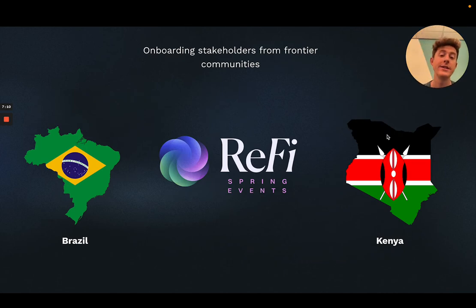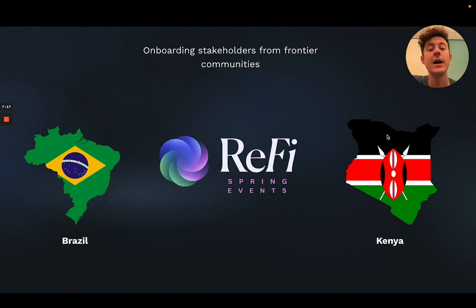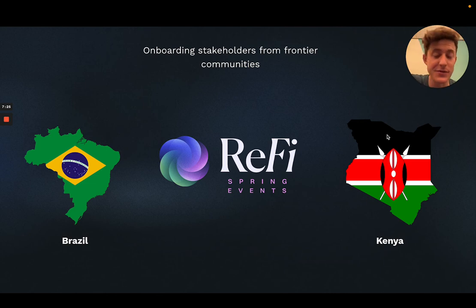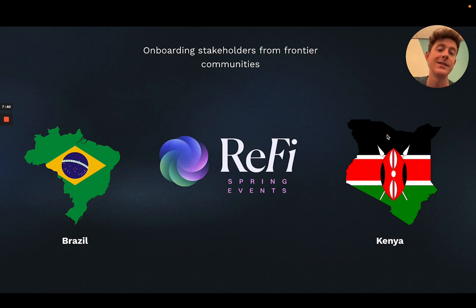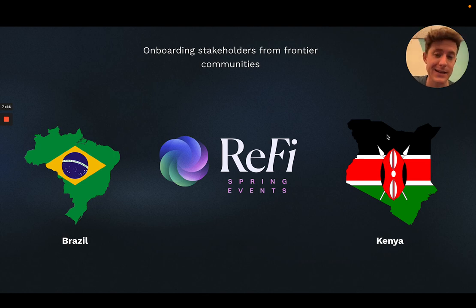We're also onboarding stakeholders from frontier communities through ReFi Spring events, with a real deep focus in the communities in Brazil and some fledgling opportunities in Kenya with people who've come out of the Shamba Protocol network, which is a geospatial data oracle that's part of ReFiDAO. This event series was also great to see Richard from Precious Plastics be a part of. We really feel this is a core part of building this movement — reaching far and wide, having local chapters of people meeting in person, and ensuring a diverse group of stakeholders committed to making a difference.